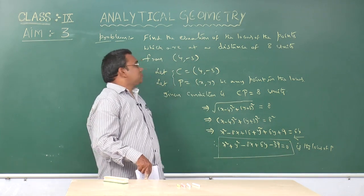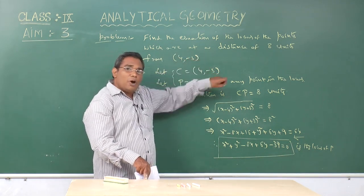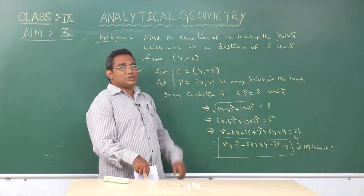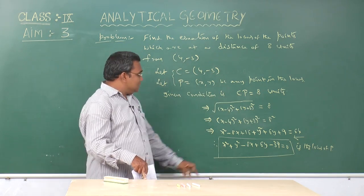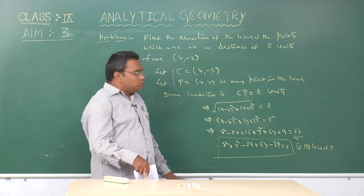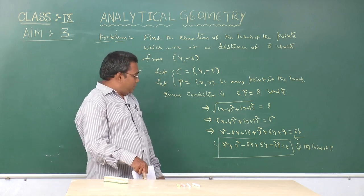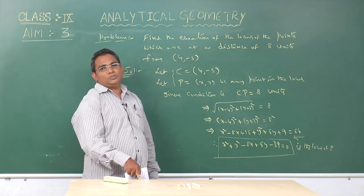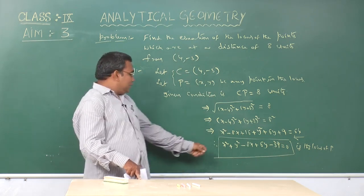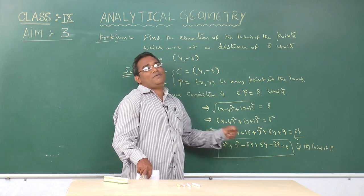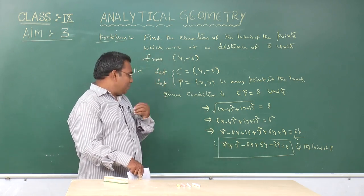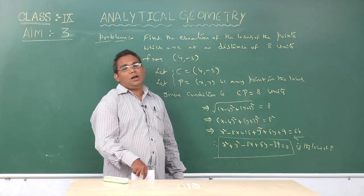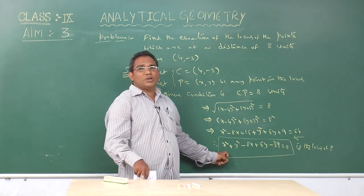Since the locus of a point at a constant distance from a fixed point represents a circle, this equation represents a circle. We observe three properties of a circle equation: first, it is a second-degree equation in x and y; second, the coefficient of x² equals the coefficient of y²; and third, the coefficient of xy equals 0.